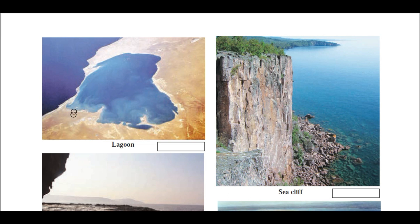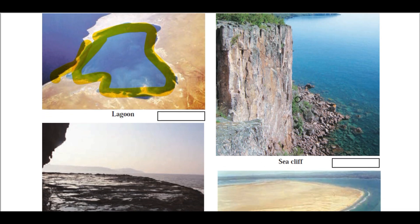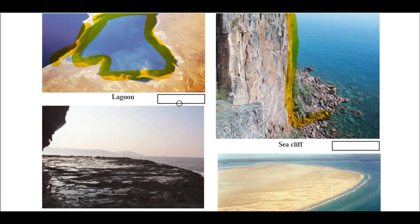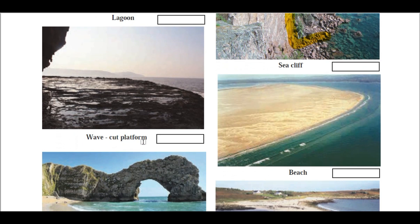Here you can see a lagoon. A lagoon is formed when sea waves deposit sand particles and form an enclave of a small water body. It is a brackish water body separated from the main ocean or sea by a small land tract or sand bar structure. Here you can also observe the sea cliff — an almost perpendicular landform structure near the sea in a rocky mountainous area. The sea cliff is an erosional landform and the lagoon is a depositional one.